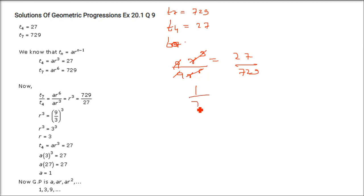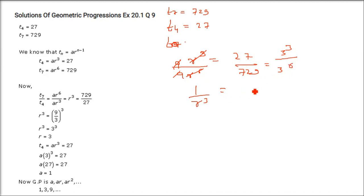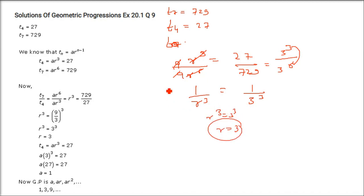Dividing T7 by T4, the a cancels, leaving r^3 = 729/27. Now 27 = 3^3 and 729 = 3^6, so we get r^3 = 3^3, meaning r = 3.